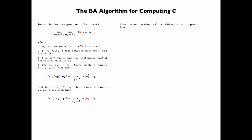Now we cast the computation of C into this optimization problem. Let F(R,Q) be summation over x, summation over y, Rx times P(y given x) log(Q(x given y) divided by Rx).